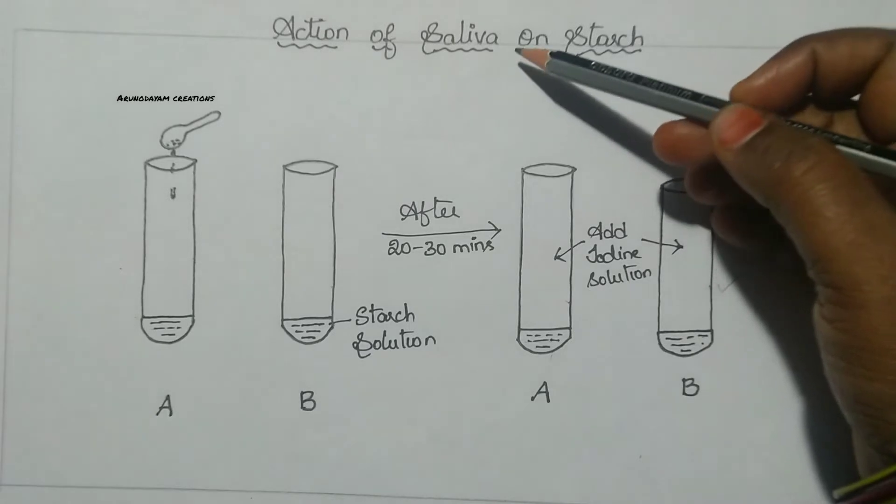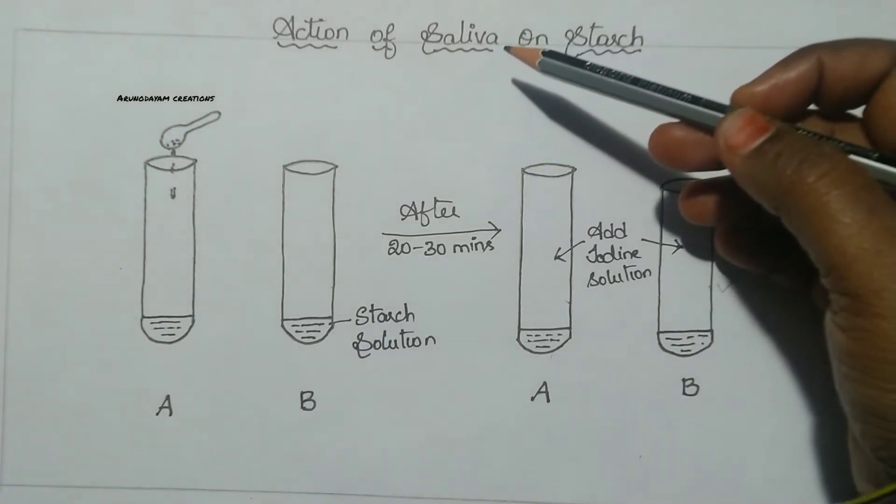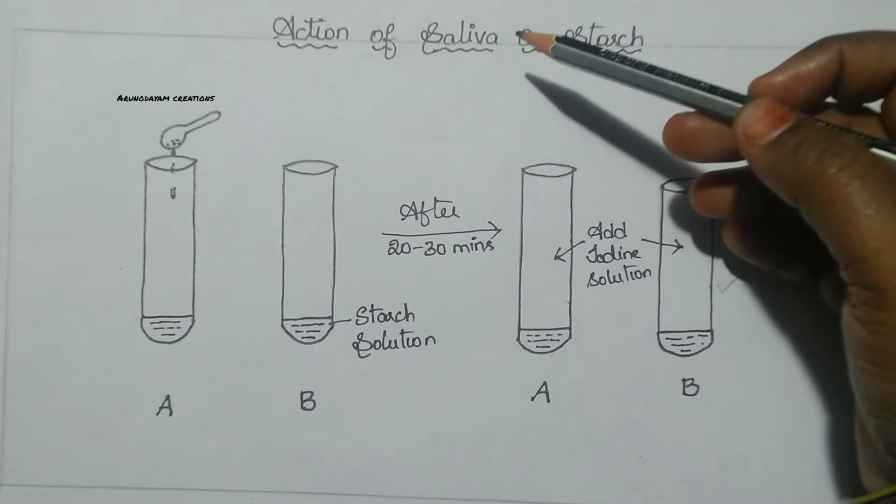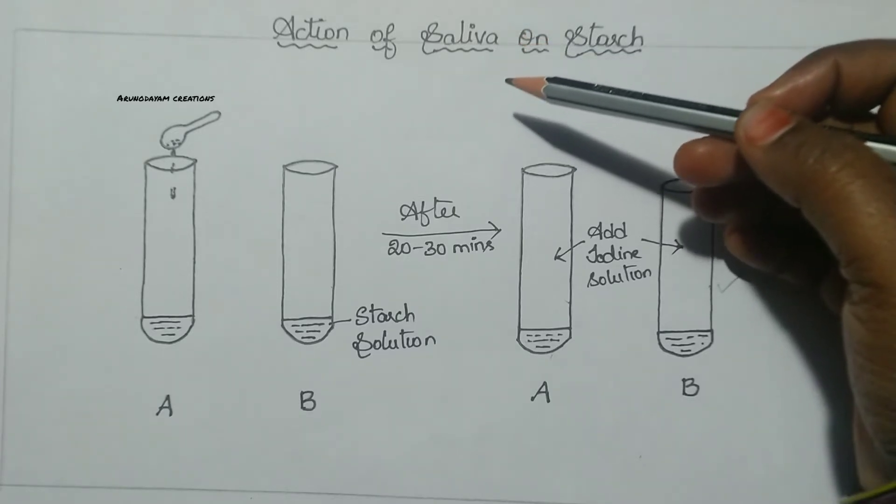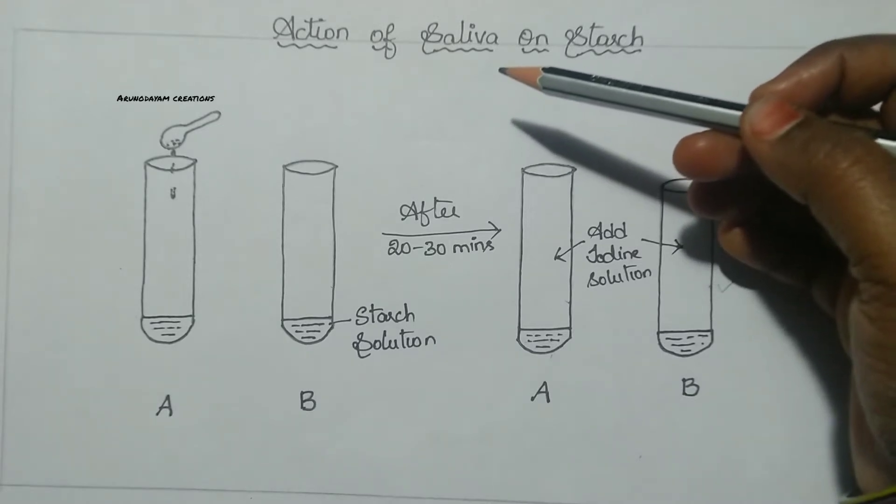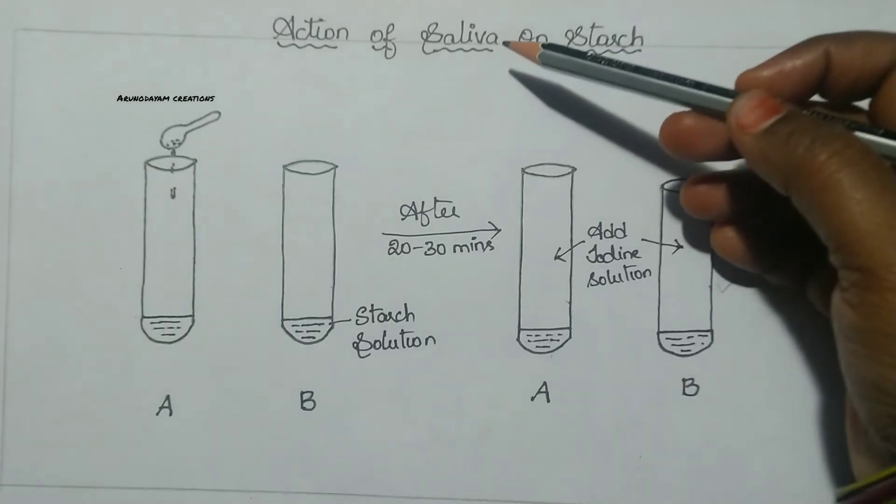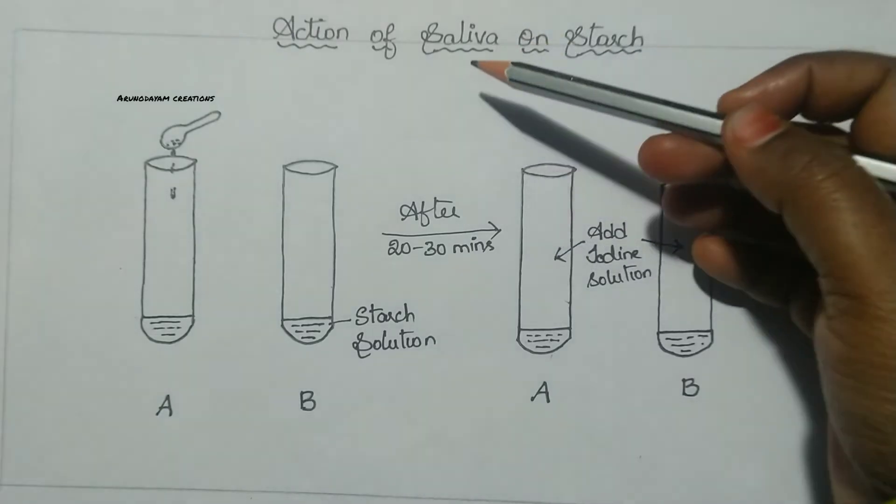First of all, what is meant by saliva? We know that three pairs of salivary glands are present in our mouth. Those three pairs of salivary glands produce some watery fluid-like substance into our body whenever we put food material into our mouth. That fluid or watery substance is nothing but saliva.